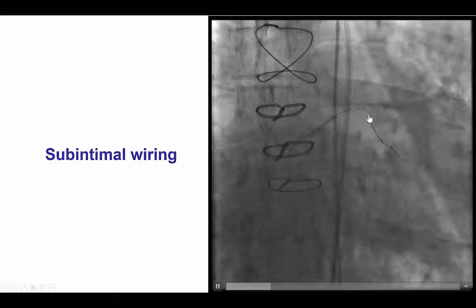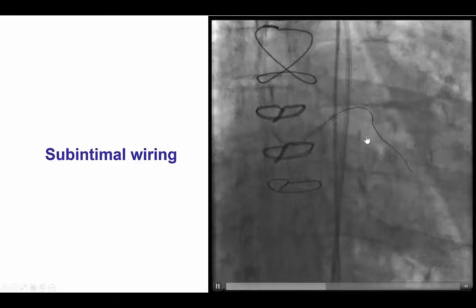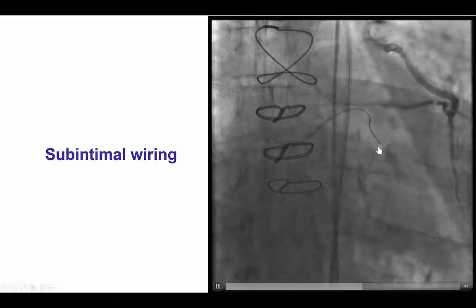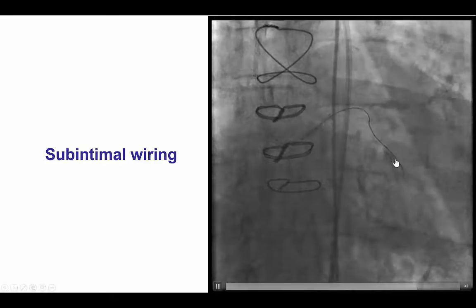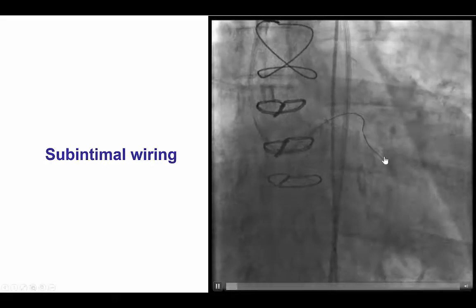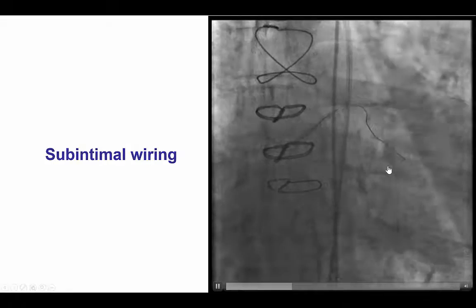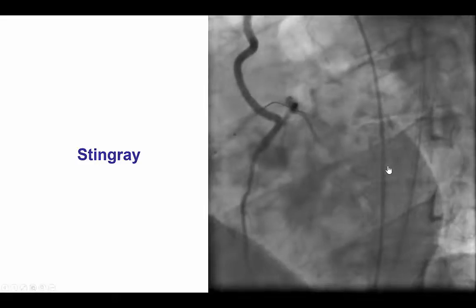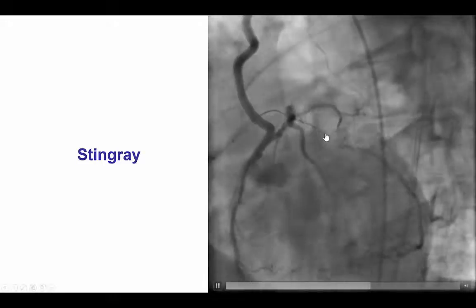Indeed, we were able to advance the guide wire further down using several microcatheters like the Caravel, as well as the Pilot 200 guide wire. We now had the guide wire tracking in sync with the large obtuse marginal branch. However, we were in a subintimal location, and therefore we needed to perform re-entry.